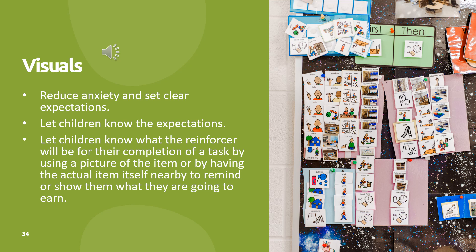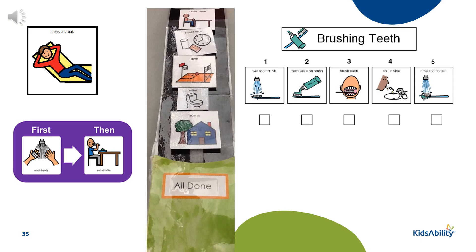Visuals can be helpful because they reduce anxiety and set clear expectations. They let children know what the reinforcer will be for completion of a task by using a picture of the item or having the actual item nearby. These are just some examples of visual supports that you might find helpful. If you'd like more information on using visual supports, you can watch our using visuals presentation.